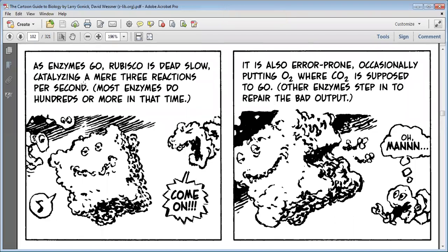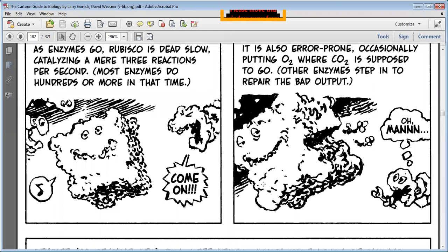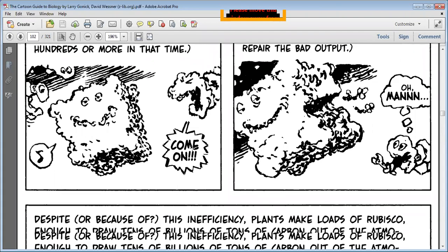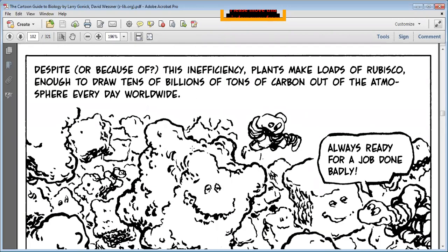Rubisco is dead slow, catalyzing a mere three reactions per second. Most enzymes do hundreds or more in that time. So Rubisco is a very slow enzyme. It is also error-prone, occasionally putting oxygen where carbon dioxide is supposed to go. Other enzymes step in to repair the bad output, so the catalyzing process becomes smoother.